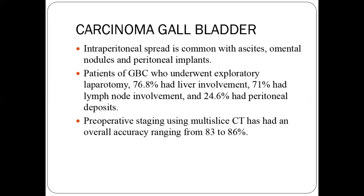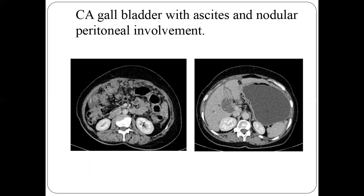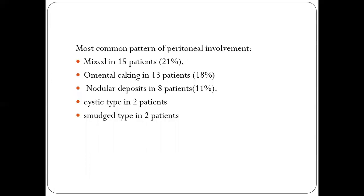Carcinoma of the gallbladder presents as ascites or omental nodules representing peritoneal implants with intraperitoneal spread. Patients who underwent exploratory laparotomy were found to have a 24% rate of peritoneal deposits. Pre-operative staging with CT was found to have 83 to 86% accuracy. An axial CT section shows nodular soft tissue densities in the omentum, with concentric asymmetrical soft tissue wall thickening in the gallbladder fossa with cholelithiasis and central hypoenhancement.